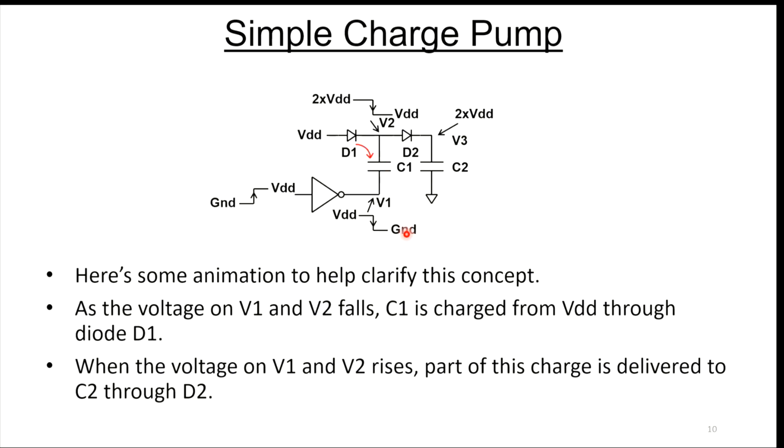If we go back and forth here, you can kind of see what's happening. On every clock cycle, a little bit of charge is moving from VDD onto the cap and then from the cap onto the output cap. That's pretty much how it works. That's kind of why it's called a charge pump because we're pumping little packets of charge on every clock cycle.